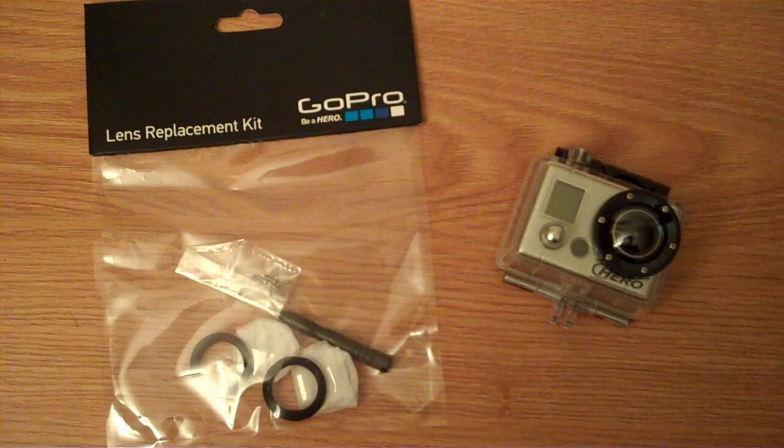The lens replacement kit, which works for both the original GoPro and the GoPro Hero 2, can be purchased at GoPro.com for around $20. I found mine on Amazon for around $15. Links to both can be found in the description below.